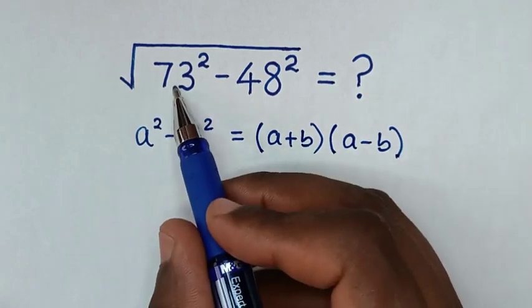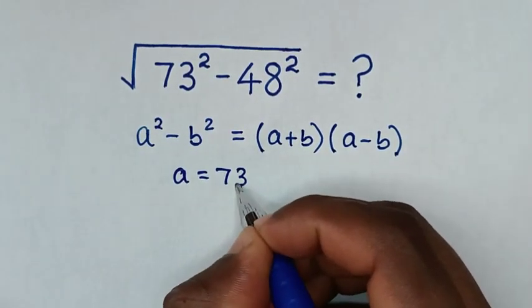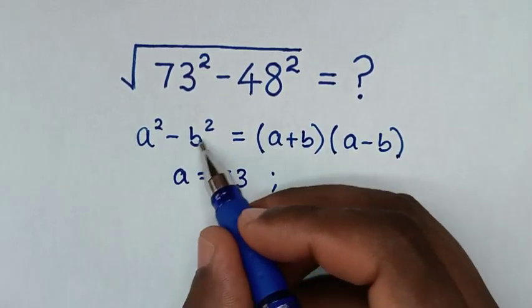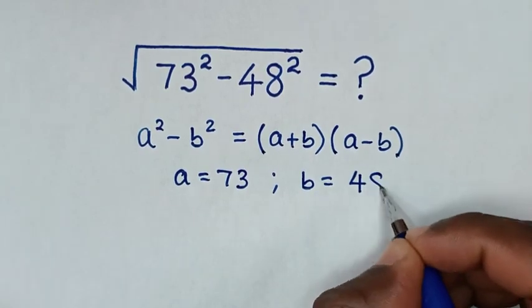When you compare a square with 73 square, then a is equal to 73, and when you compare b square with 48 square, then b is equal to 48.